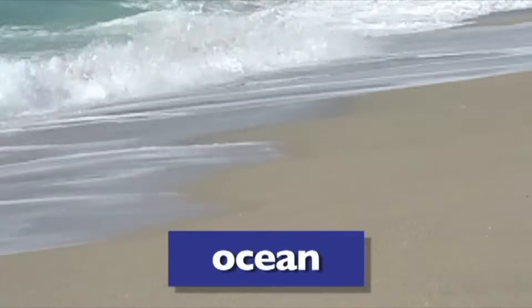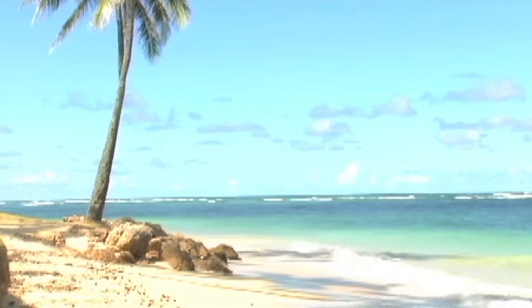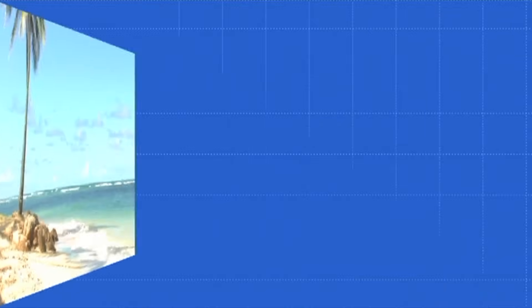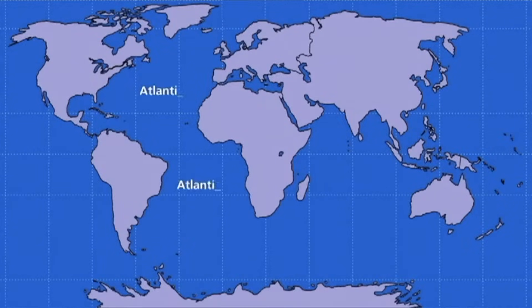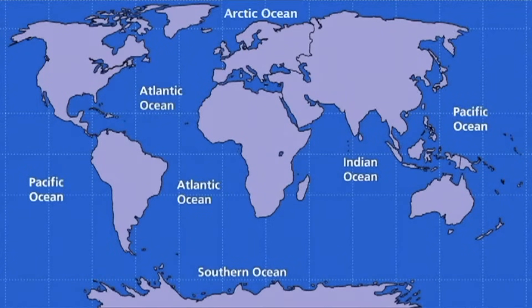Over 70% of the Earth is covered by water. The largest bodies of water are the oceans. Although all the oceans are really connected, geographers divided these waters into five separate oceans: the Atlantic Ocean, the Indian Ocean, the Southern Ocean, the Pacific Ocean, and the Arctic Ocean. The Pacific Ocean is the largest — it's nearly twice as large as the Atlantic and takes up half of the entire surface of the Earth.